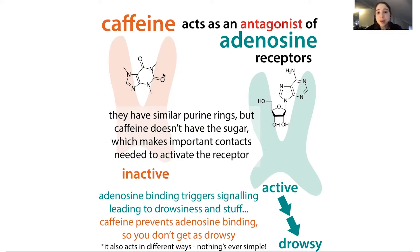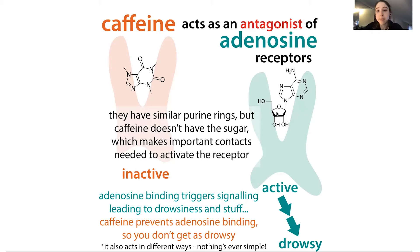Caffeine looks kind of like adenosine in that it has that same purine-type part, but caffeine does not have the ribose sugar. That sugar is needed to make some important contacts with the receptor. Without those contacts, caffeine binds a little differently and gets the receptor stuck in an inactive conformation — a conformation is just like a shape.